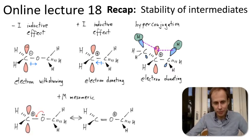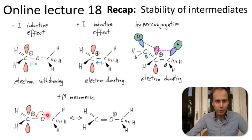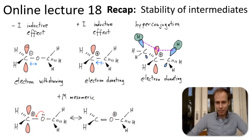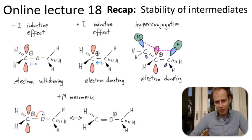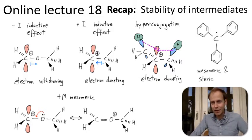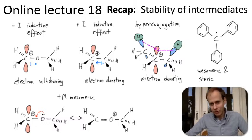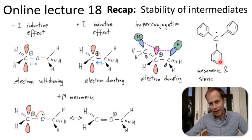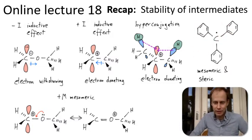Then we discussed mesomeric effects. This is the positive mesomeric effect where a lone pair donates an electron to form a pi bond, and that leads to delocalization. Delocalization lowers the energy and stabilizes reactive intermediates. There is also a negative mesomeric effect. Next to electronic effects, there are steric effects, where the bulky volume physically blocks access to the reactive side — in this case the radical carbon in the middle.